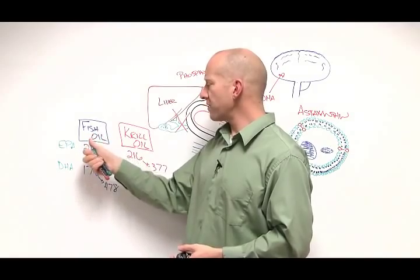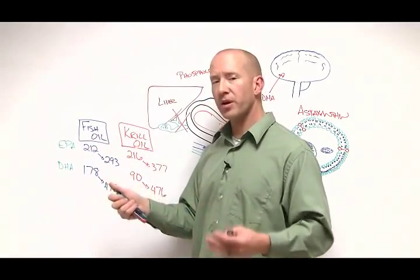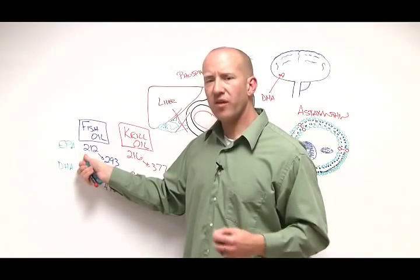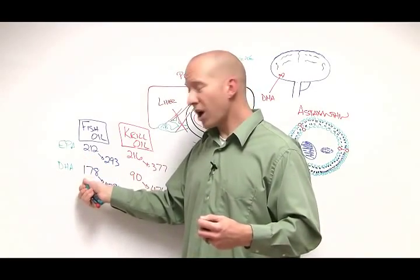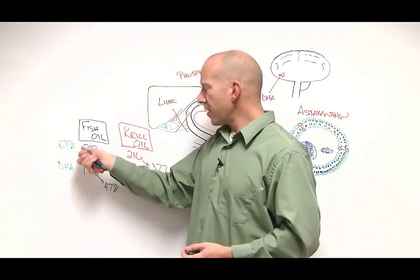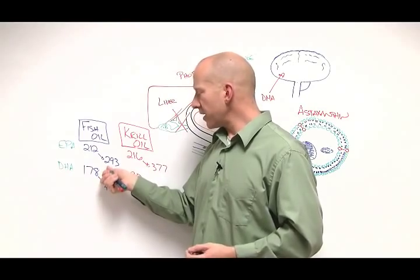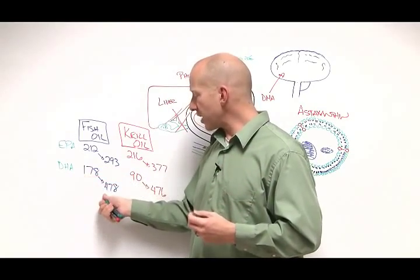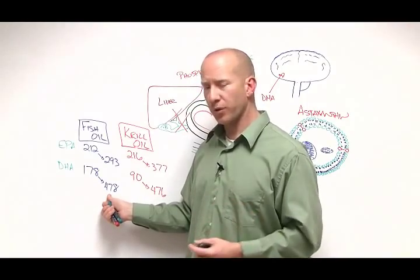There were two groups, one taking fish oil and one taking krill oil for a period of 30 days. The people taking fish oil were consuming 212 mg of EPA and 178 mg of DHA for 30 days. The EPA in the blood resulted in 293 units in the blood and DHA was 478 in the fish oil group.